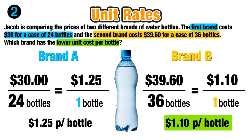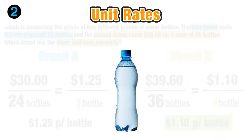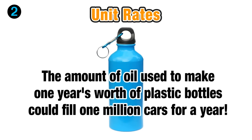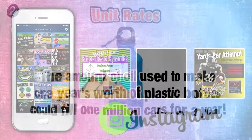Comparing these unit rates, Brand B is the better deal since it costs 15 cents less per bottle than Brand A. However, Jacob is well informed about the fact that the amount of oil used to make one year's worth of plastic bottles could fill one million cars for an entire year, so he decides to use that money on a reusable water container instead.